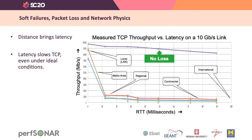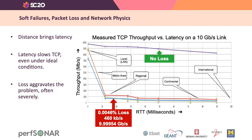If you look at the chart on the right, the purple line shows what happens when you put TCP traffic across a 10 gigabit per second link at varying round trip times. You'll notice that on the left you get almost full throughput. As the round trip time increases, throughput drops off, and that's just a side effect of the way TCP works. However, even by 90 millisecond round trip times, you still have about 80% of your carrying capacity. On the other hand, if you put loss into the system, that aggravates the problem, often severely, and it doesn't take much. The two lines at the bottom of the chart are two real and one theoretical implementation of TCP congestion control when faced with 0.0046% loss.